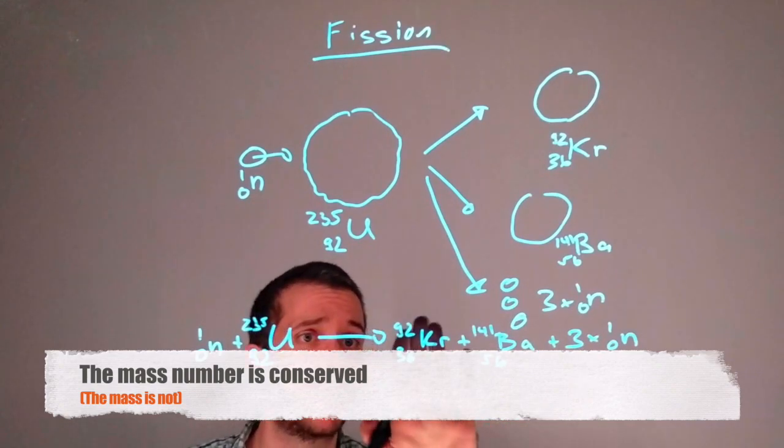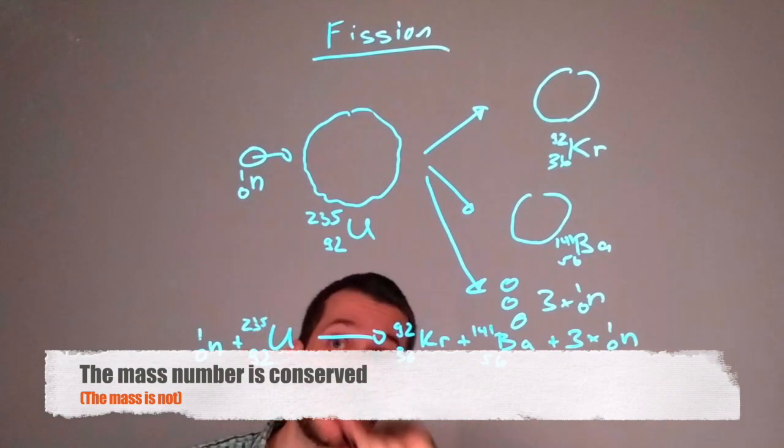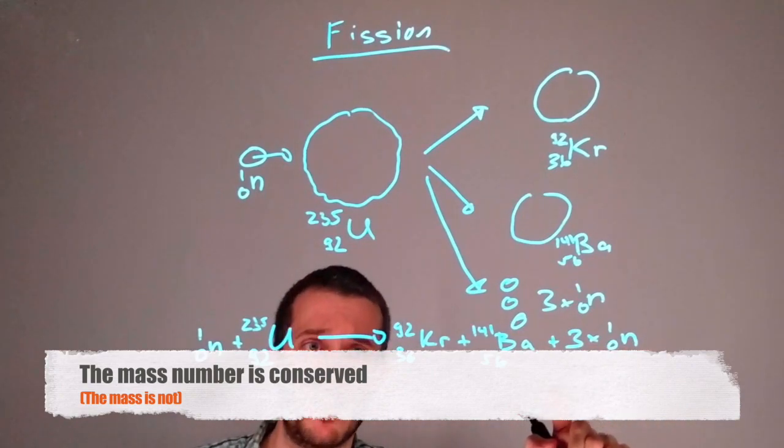how if you have a question where only one of the products is given, you can figure out the mass number of the other one. You know that the top lines here must add up.